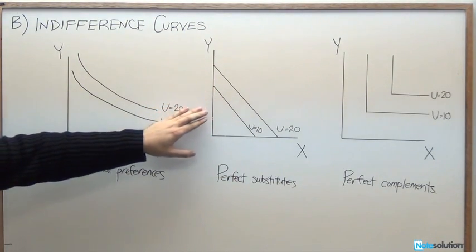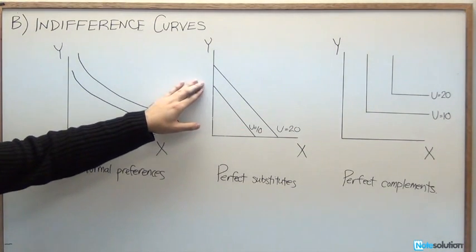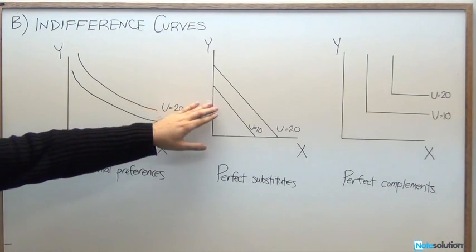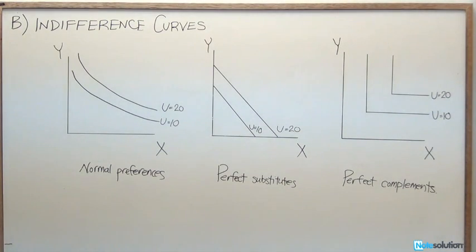What that represents is the marginal rate of substitution is going to be equal everywhere along the curve. What does that mean? We're saying there's no diminishing marginal returns effect. In this case, that's not going to apply.